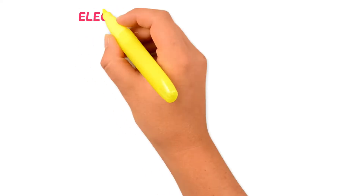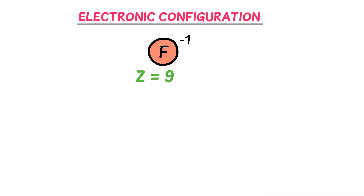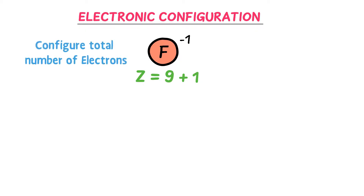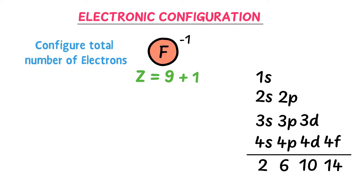Lastly, let me teach you the electronic configuration of negative ions, like F⁻. F⁻ means the fluorine atom has gained 1 electron from someone. The atomic number of neutral fluorine is 9. We add the 1 gained electron, so we get 9+1=10 electrons. For negative ions, just configure the total number of electrons.